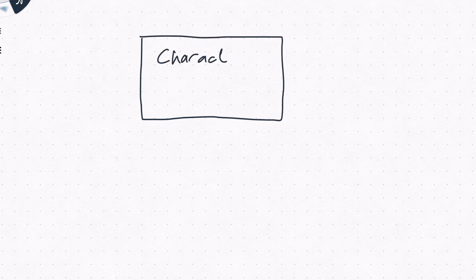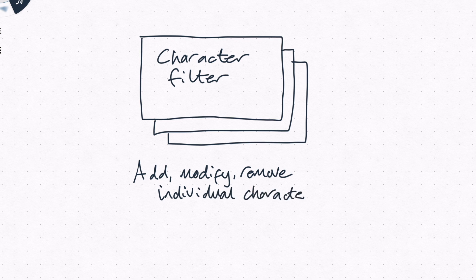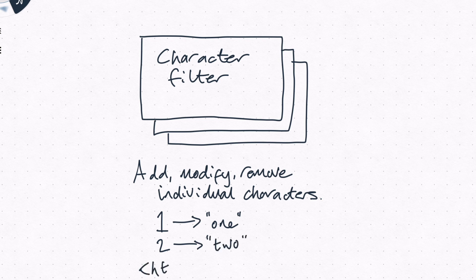An analyzer has three components. The first step in analysis is done by character filters. Character filters work on individual characters in the source text, adding, modifying, or removing characters. This step is commonly used to replace characters or remove them entirely, for example to take out formatting or HTML. You're able to use multiple character filters in an analyzer, and they are executed in the order they're defined. Character filters aren't required though.